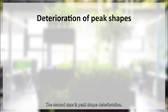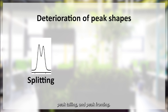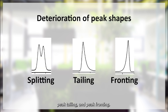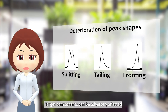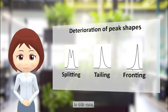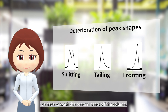The second case is peak shape deterioration. Examples include peak splitting, peak tailing, and peak fronting. These can be caused by contaminants absorbed on the column, which can change the retention behavior. Target components can be adversely affected by contaminants absorbed on the column. In this case, we have to wash the contaminants off the column.